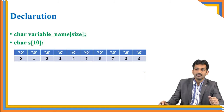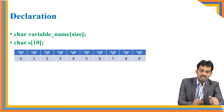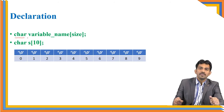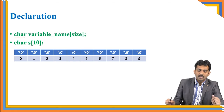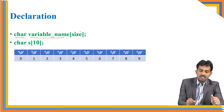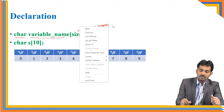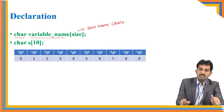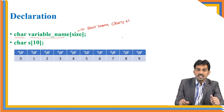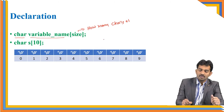We will see the declaration. The data type is char, followed by a variable name of your choice, and the size — meaning how many characters you are going to store. You declare size as the number of characters plus 1. Why plus 1? Because every string ends with a null character. For example, if you are going to store 4 characters, you should create a size of 4 plus 1.